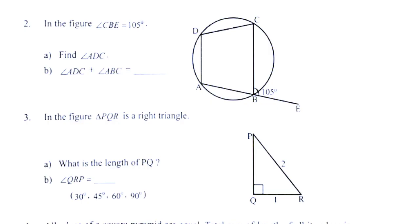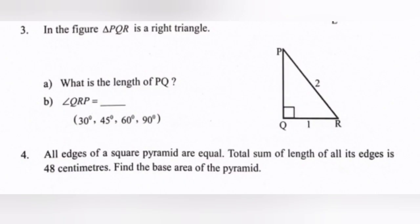Question 2: In the figure, angle CBE is equal to 105 degrees. Part a: Find angle ADC. Answer: Angle ADC is equal to 105 degrees. Part b: Angle ADC plus angle ABC is equal to dash. Answer: 180 degrees.